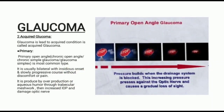Next is acquired glaucoma. Primary open angle glaucoma is also called chronic open angle glaucoma, chronic simple glaucoma, and glaucoma simplex. It is the most common type of glaucoma. It is usually bilateral with insidious onset and slowly progressing course without discomfort or pain. It is produced by overproduction of aqueous humor or impaired outflow through the trabecular meshwork, leading to increased intraocular pressure and optic nerve damage.